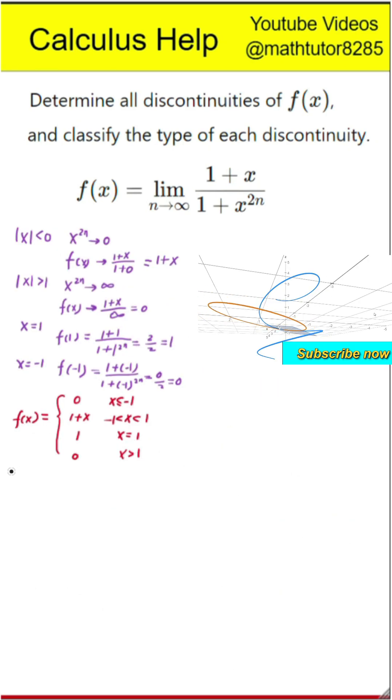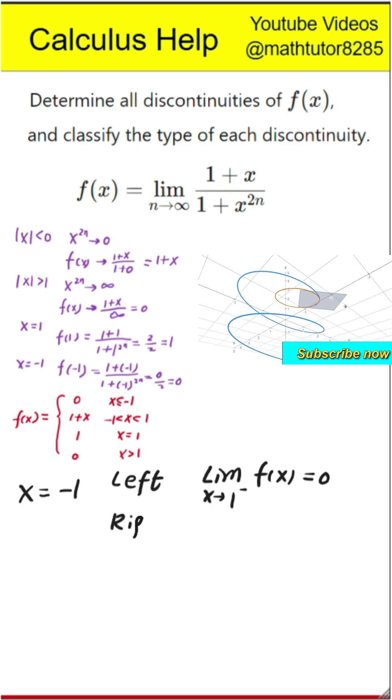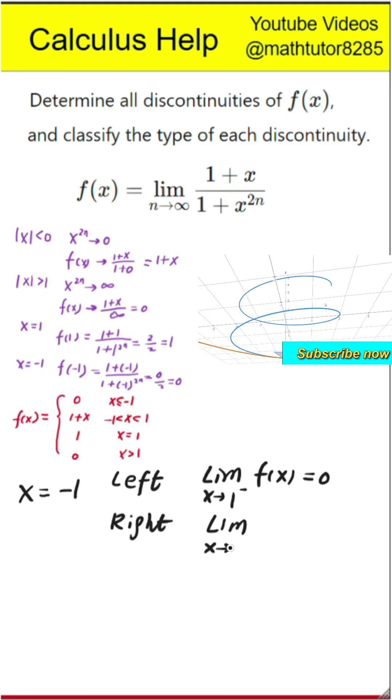Next step is to check for continuity at transition points. Now we look at the points where the formula for f changes at x equals negative 1 and x equals 1. Let's first check at x equals negative 1. Approaching from the left, f of x is 0. Approaching from the right, 1 plus x also becomes 0. And f at negative 1 is also 0. So since the left limit, the right limit, and the function value all agree, the function is continuous at x equals negative 1.